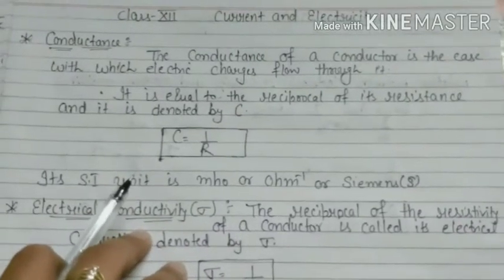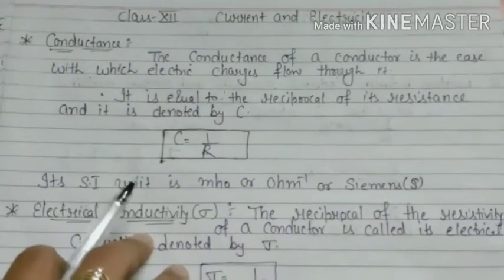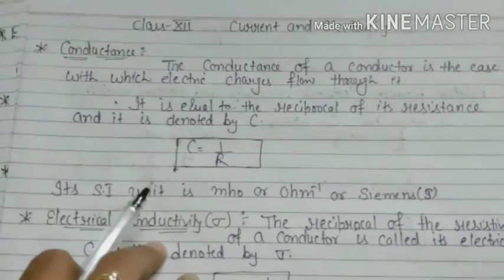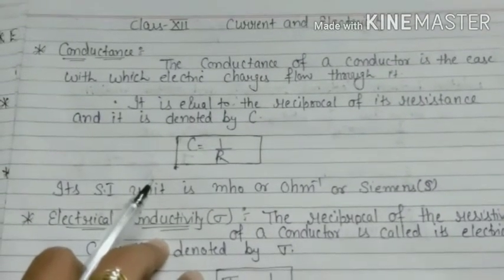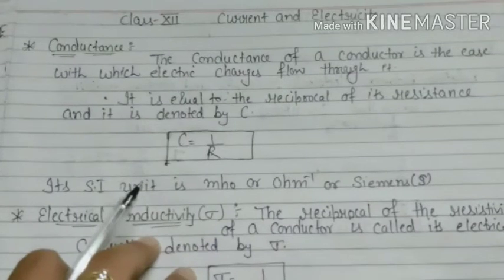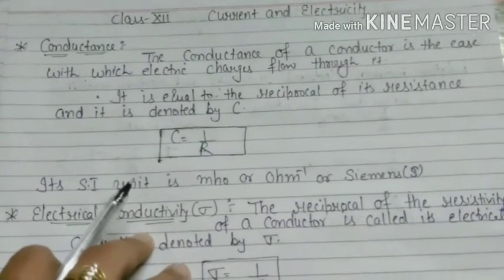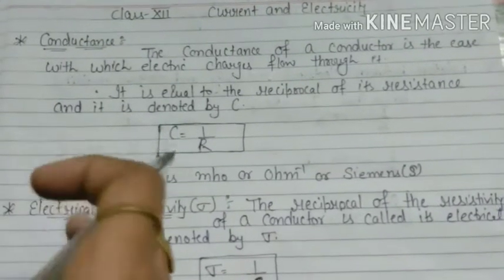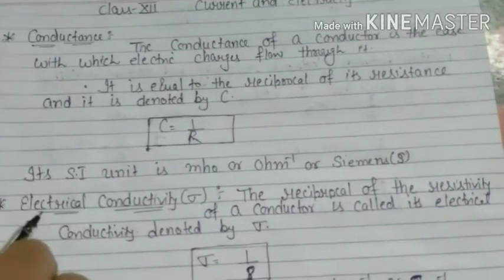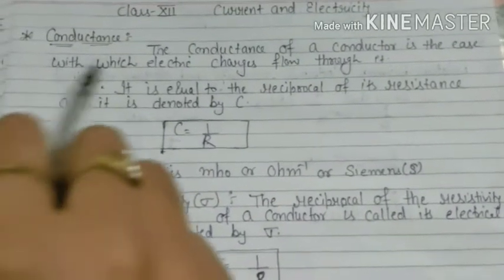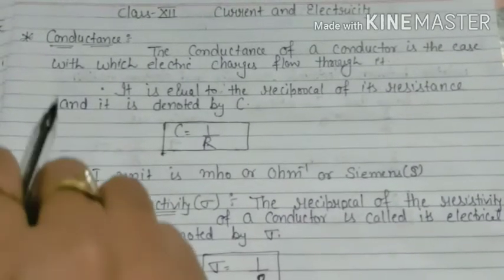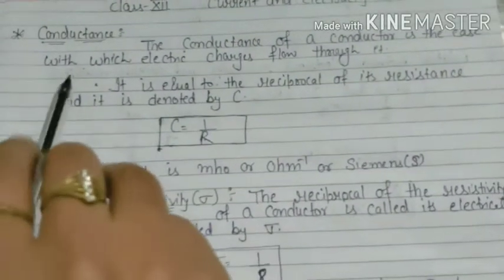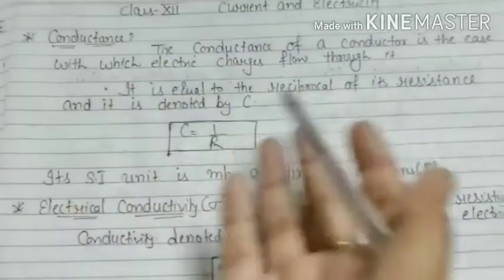Hello everyone, welcome to my YouTube channel. Today I am here with a new lecture of class 12 physics on the topic of current and electricity. As we discussed Ohm's law and terms like resistance and resistivity, today I am here with a few more related terms. The first one is conductance and the second one is electrical conductivity, and after discussing these two terms we will discuss the microscopic form of Ohm's law.